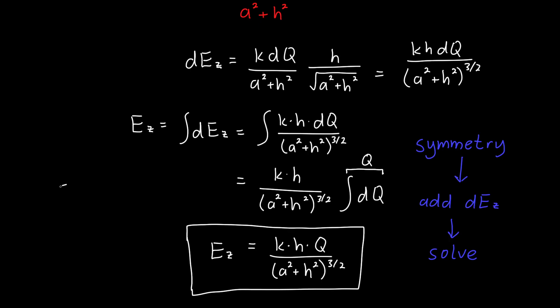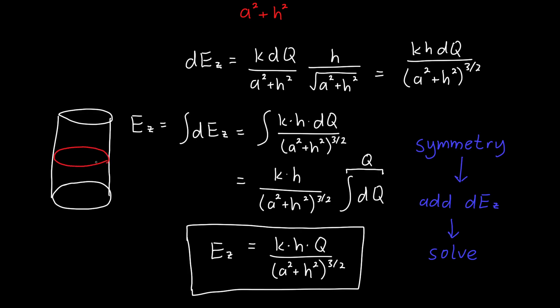The ring of charge is actually a building block for other problems. For example, to find the electric field of a finite cylindrical shell, we could split that up into a bunch of little rings, and since we know the electric field from a ring, we can add up a bunch of different rings. So this simple structure lets us tackle much more complicated problems.